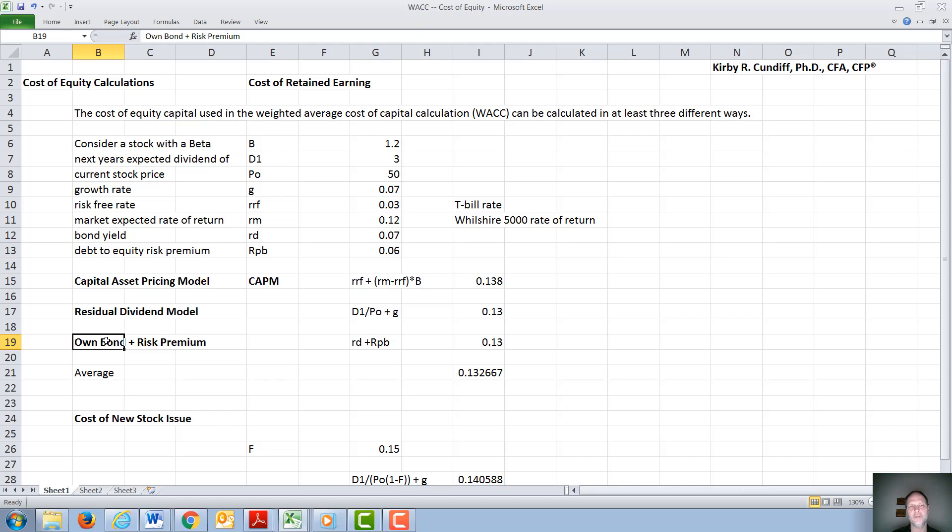The simplest way of calculating the cost of retained earnings is the own bond plus risk yield approach. In our example, the bonds of this company pay 7% interest, and we're assuming for the average company, the equity is expected to return 6% above the debt. The two add together to be 13%.